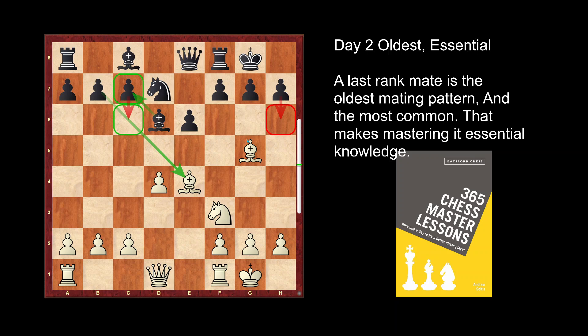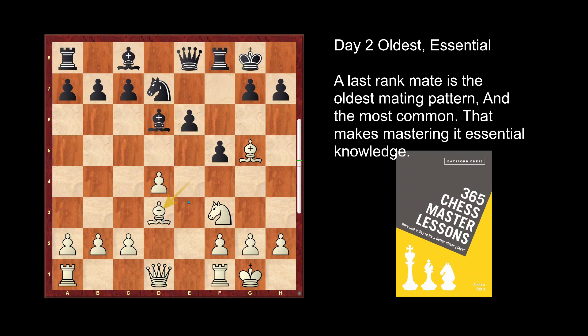He pushed the pawn — this move weakens the pawn structure. There is no pawn covering f7 anymore, and it makes that pawn backward — another problem. White has no choice but to go back. At this moment if you don't push the pawn now, you will almost never be able to push it.